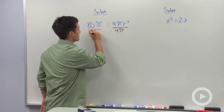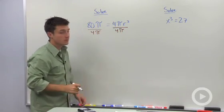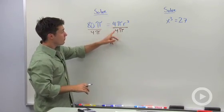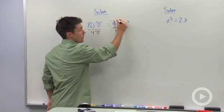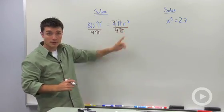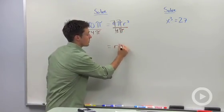So I'm going to divide both sides by 4π. So it should look familiar, something that you did last year in algebra. 4π divided by 4π is 1. Anything divided by itself is 1. The only thing left on the right side is r squared.